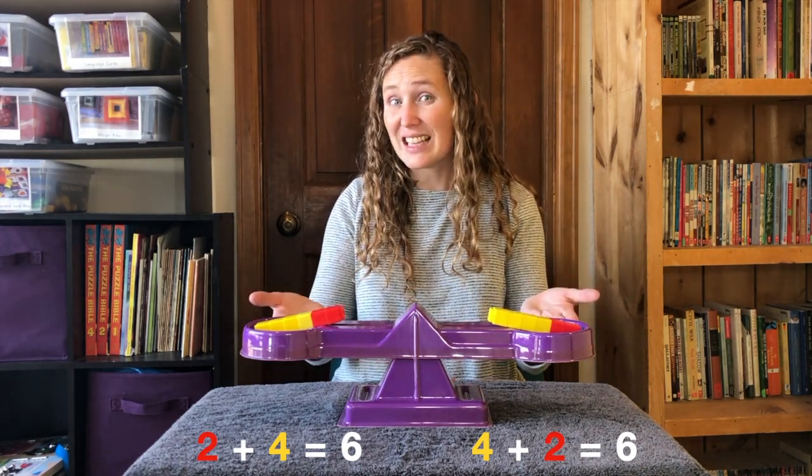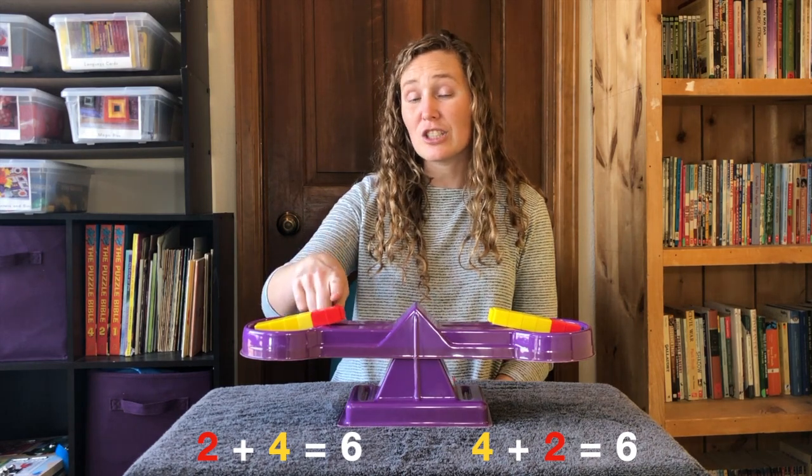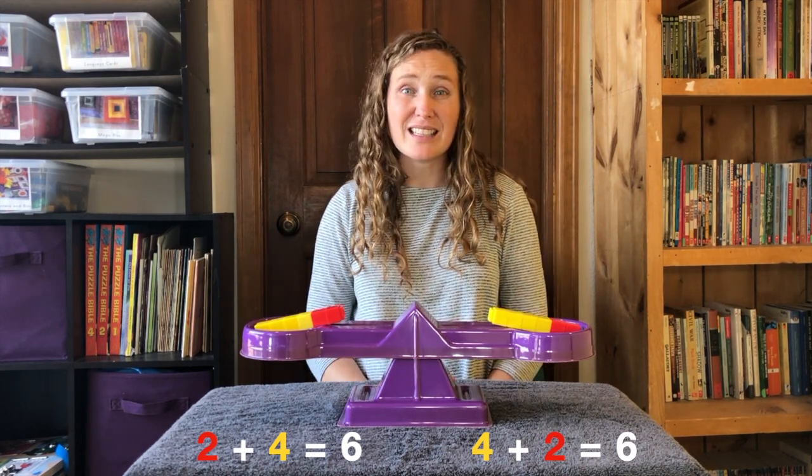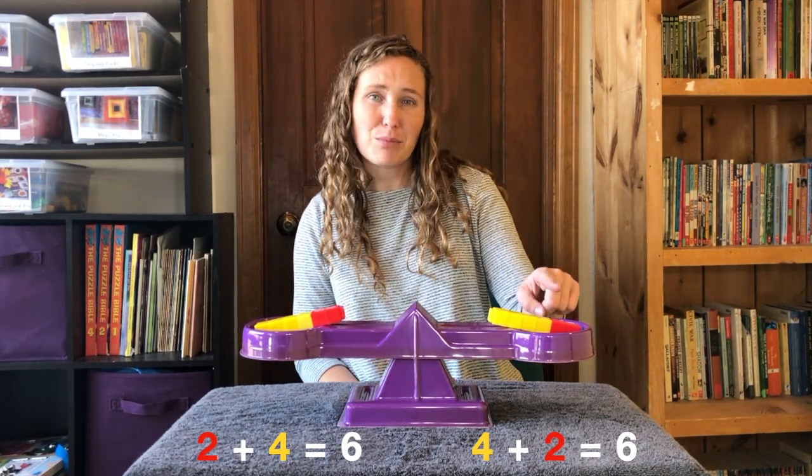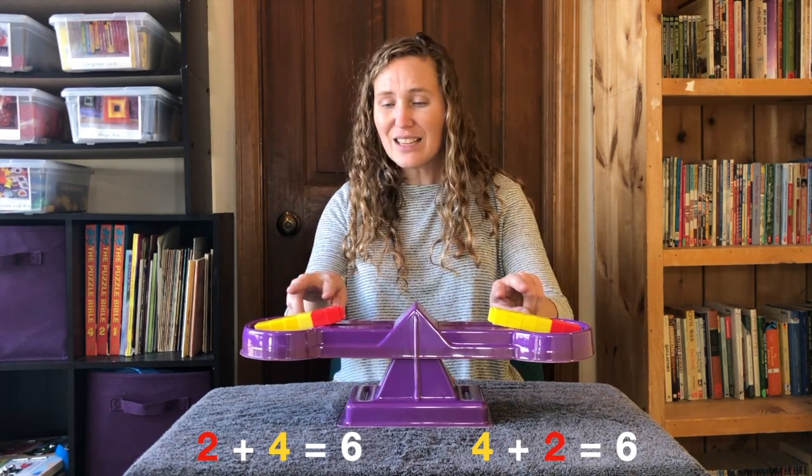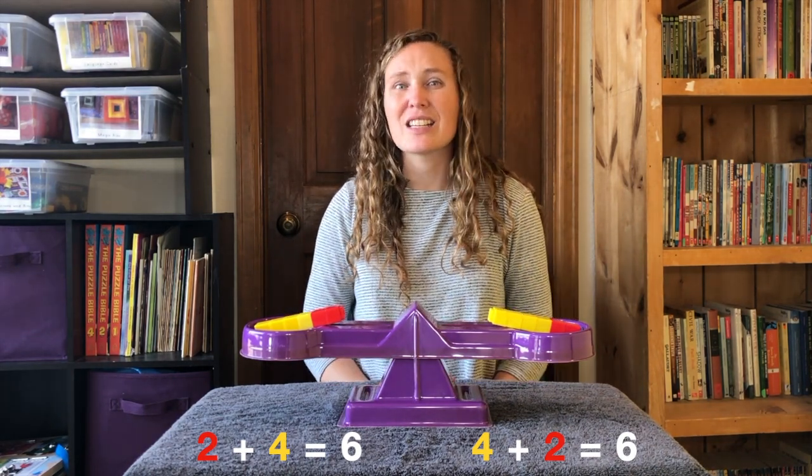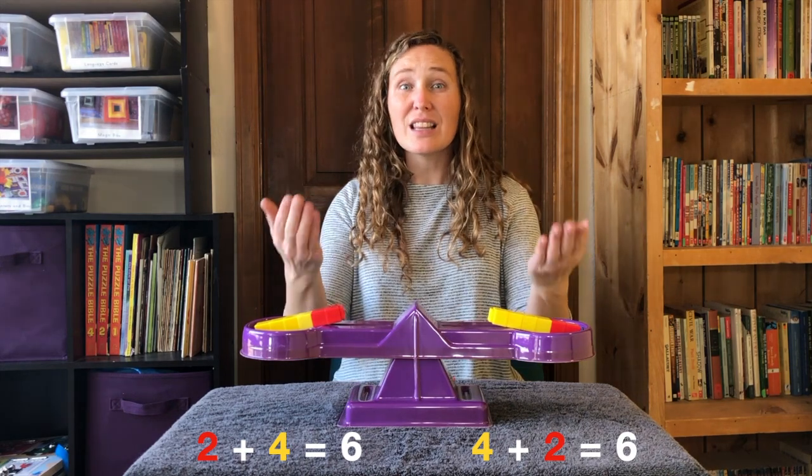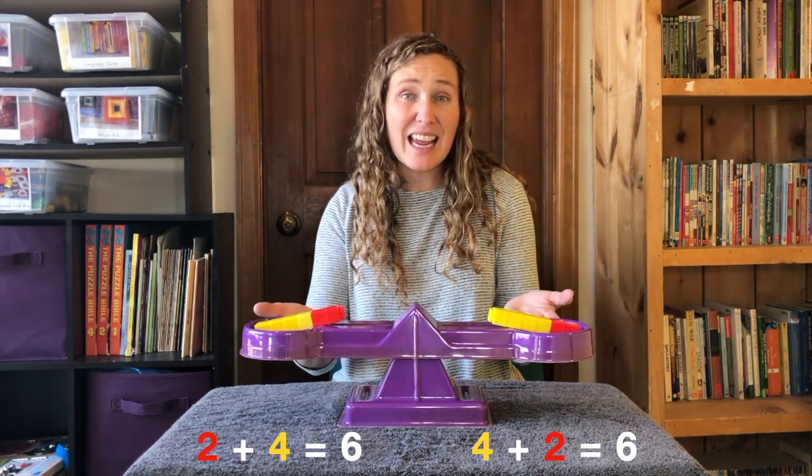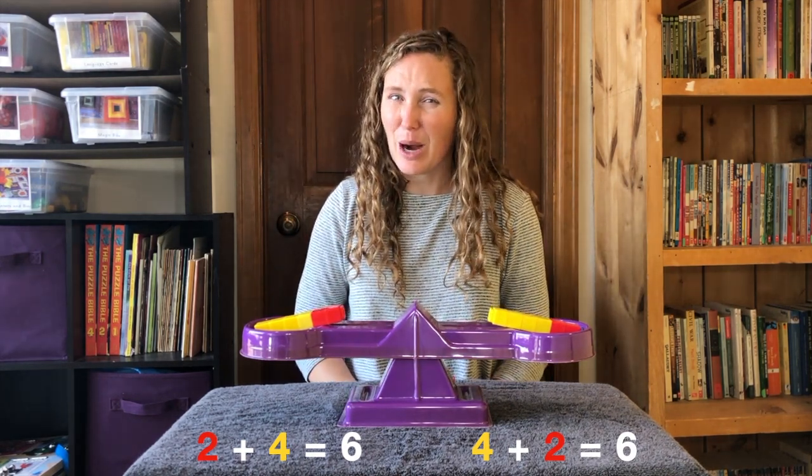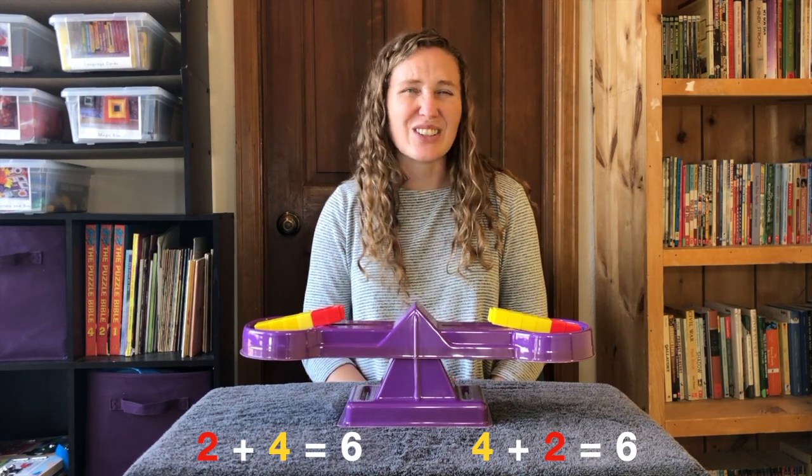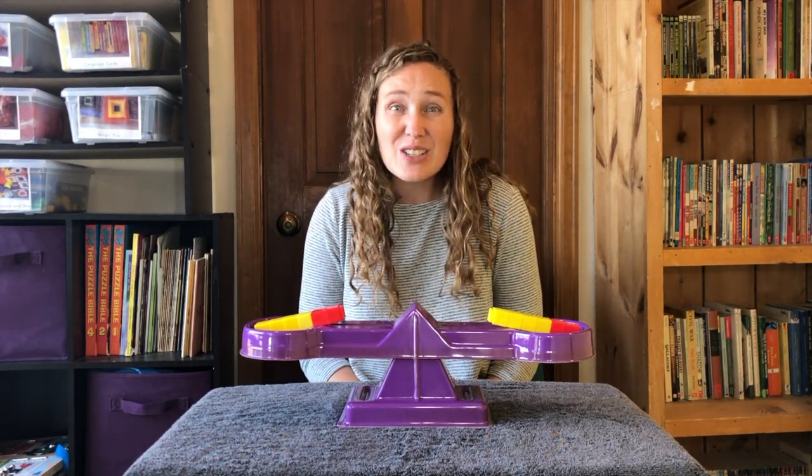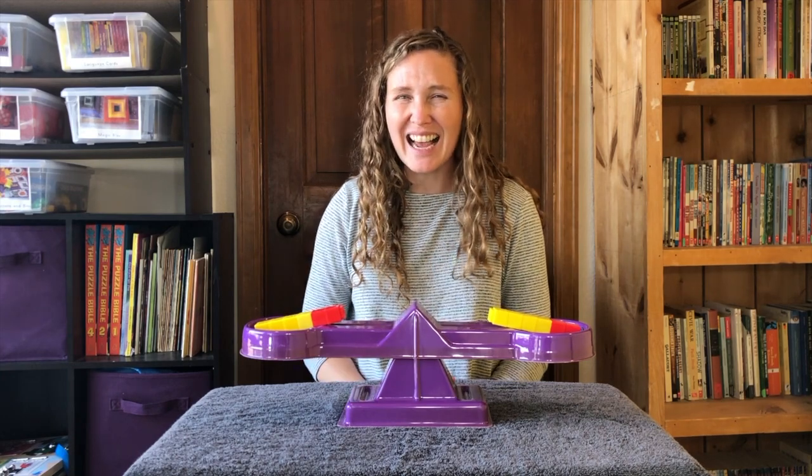There's six on both sides. Even though we did two plus four on this side, and then four plus two on this side, even if we added the colors in a different order, the weight is still the same. The commutative property tells us our answers are still the same. Let's do our scale one more time.